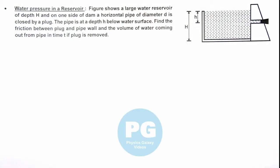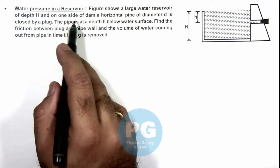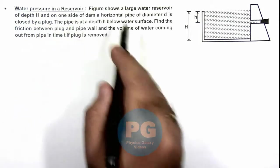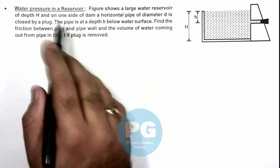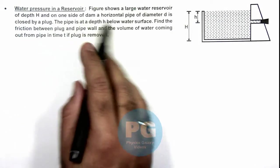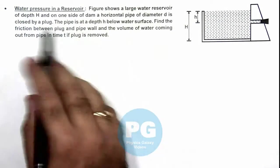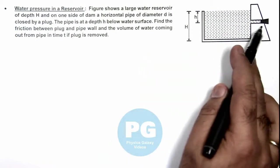In this illustration we'll analyze the water pressure in a reservoir. Here the figure shows a large water reservoir of depth h, and on one side of them a horizontal pipe of diameter d is closed by a plug.